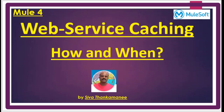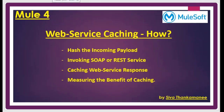Let's get started. In this video, we will be talking about four important topics. The first one is how to hash the incoming payload — there is a difference between hashing and caching, so the first step is to hash the incoming payload to create a unique ID. The second one is invoking the SOAP or REST service to demonstrate how to call the third-party service. The third one is the technique of how to cache the web service response. And finally, we are going to measure the benefit of caching — doing before and after to see how much performance we gain by applying the caching mechanism.